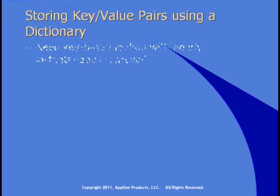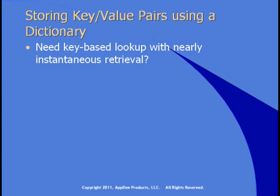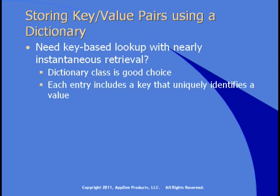Let's start by looking at a dictionary. Do you need key-based lookup with nearly instantaneous retrieval? If so, the dictionary class is a good choice. Each entry includes a key that uniquely identifies a value. One drawback is that each key has to be unique. If you need to look things up where you'll have multiple instances of the same key value, you'll need to rethink your approach.